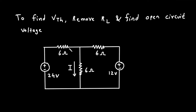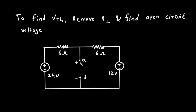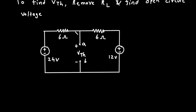To find VTH, we remove the load resistor. Let's say this is terminal A and this is terminal B — positive and negative. We have to find this open circuit voltage, which is called Thevenin's voltage VTH. To do so, first we need to find the current through this circuit by applying Kirchhoff's voltage law.